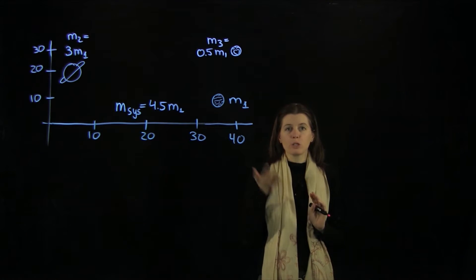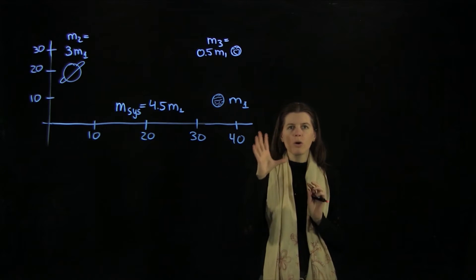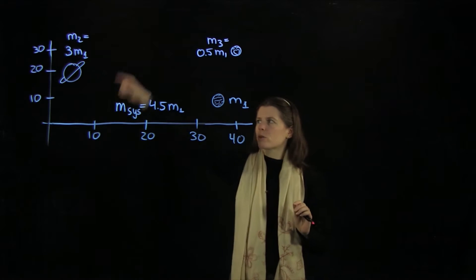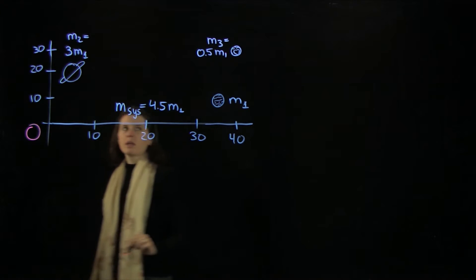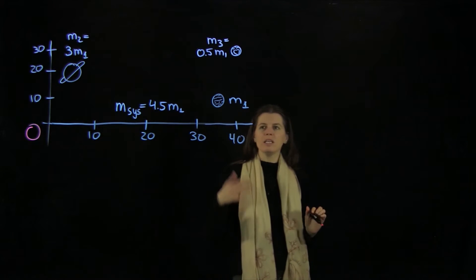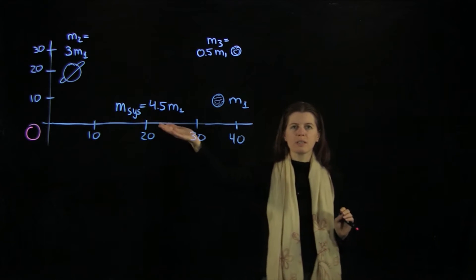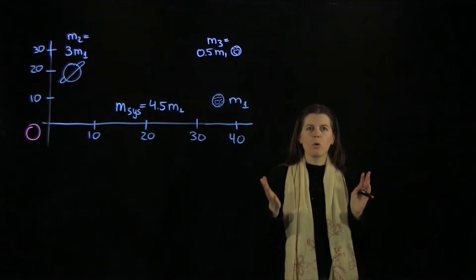When we want to determine its coordinate, it is a coordinate that depends on this coordinate system and this origin here. Then we need to have the total mass of the system because it's a mass-weighted coordinate.